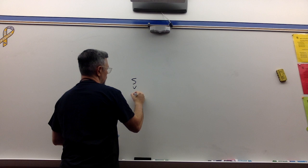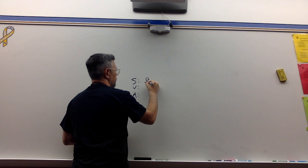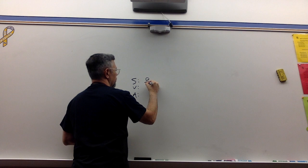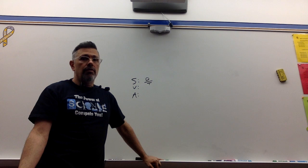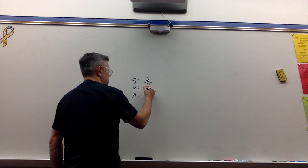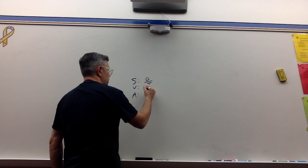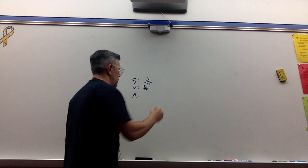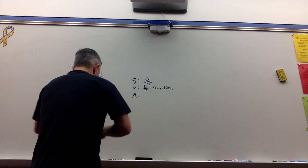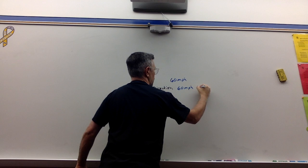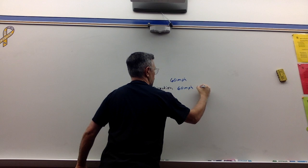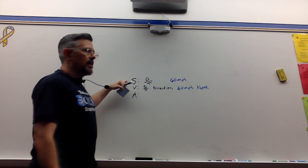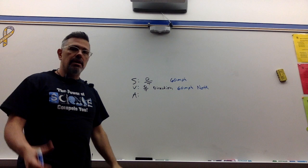Speed, velocity, and acceleration. Know that speed equals distance over time. If you're driving 60 miles an hour for five hours, you know you're going to go 300 miles. Velocity is the same formula — distance over time — but it also needs one more thing: a direction. So an example of speed is 60 miles per hour; an example of velocity is 60 miles per hour north. You can change the same speed into a velocity just by giving it a direction. Velocity is speed and direction.